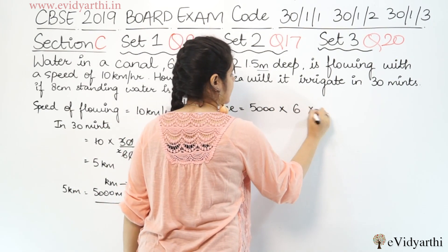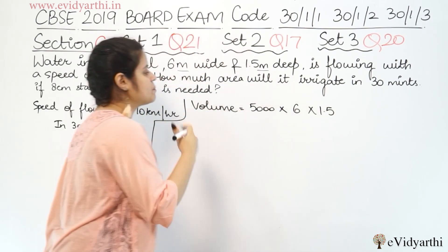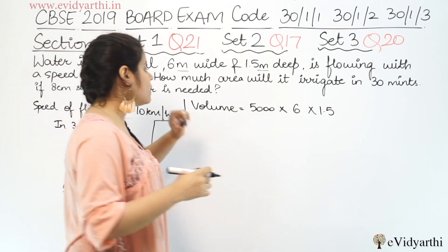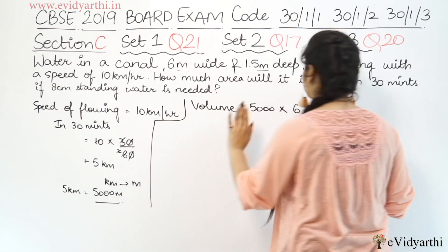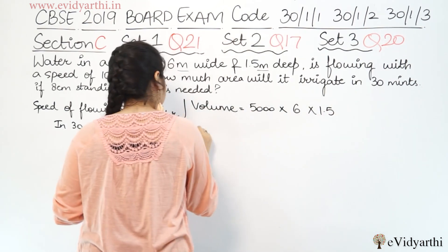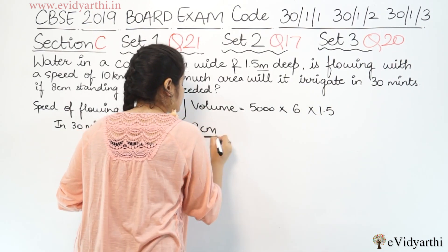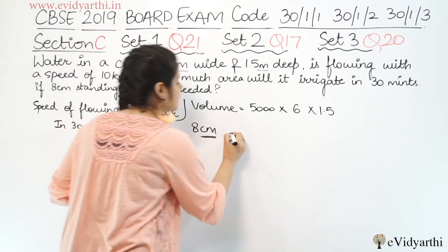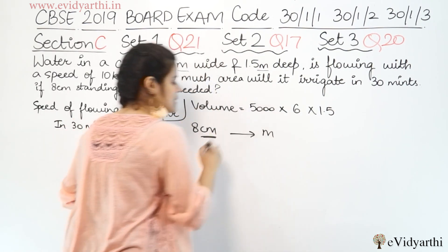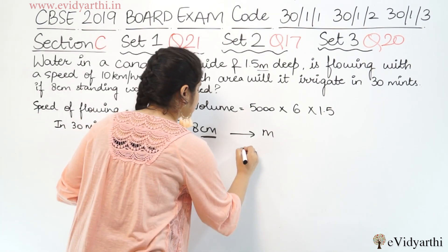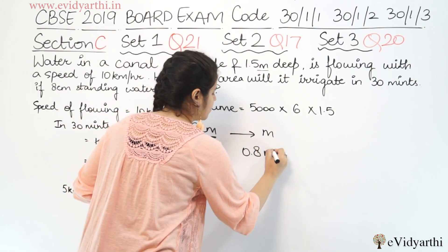So the volume of water flowing in 30 minutes is: length × width × depth = 5,000 × 6 × 1.5. This gives us the volume of water in cubic meters. The area we need to find depends on how much standing water is required, which is 8 cm.